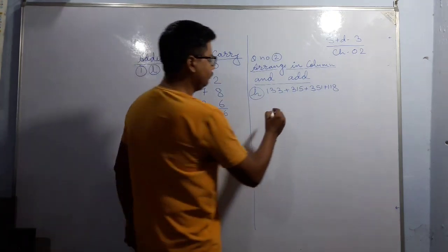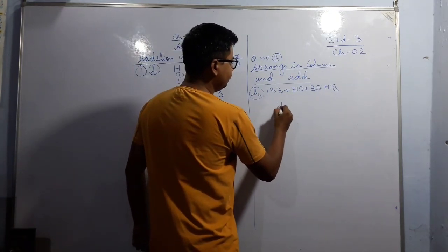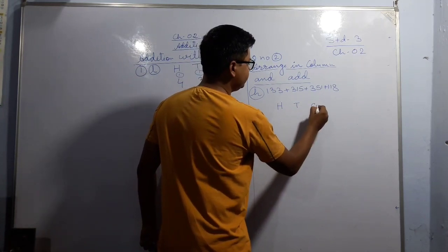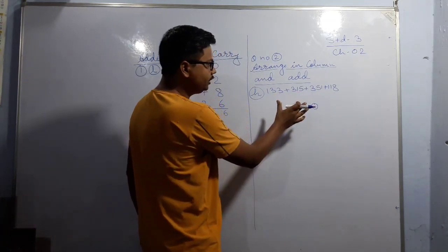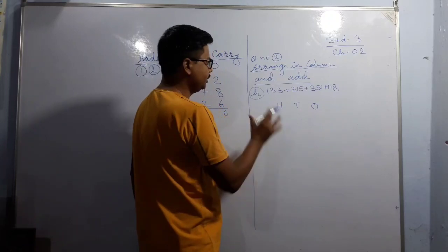First of all, you have to write these three places: hundreds, tens, ones. And after this, we have to write all these numbers.